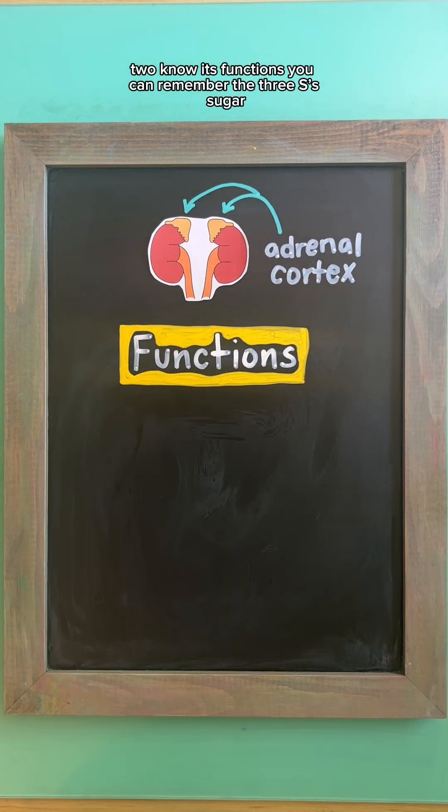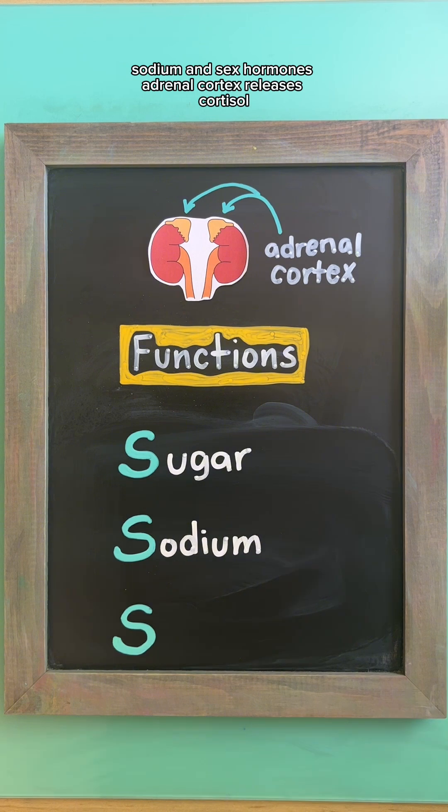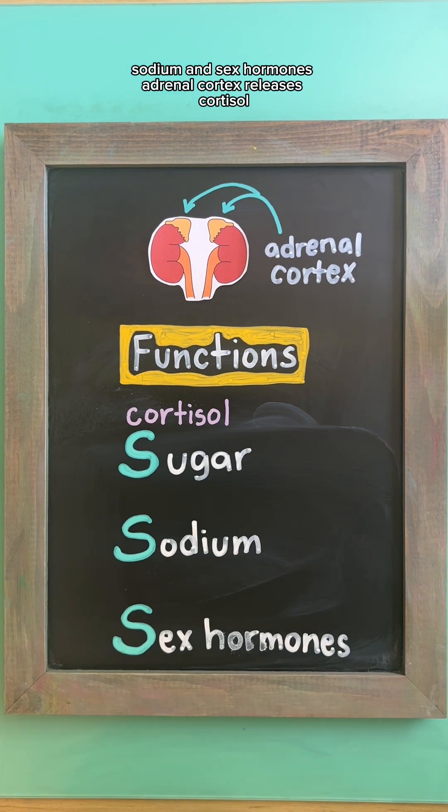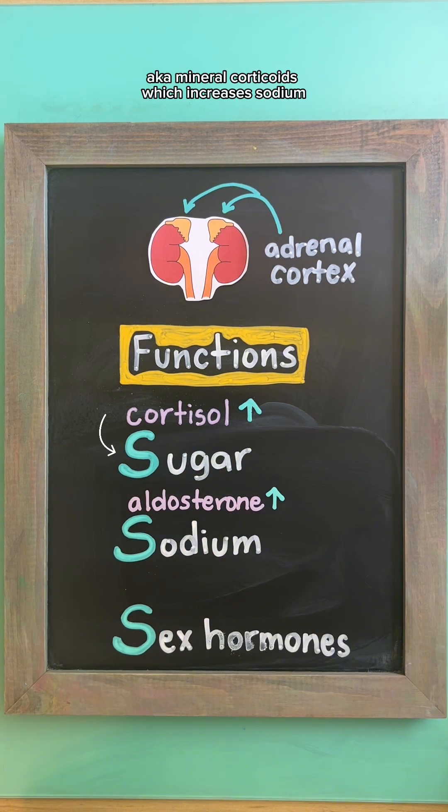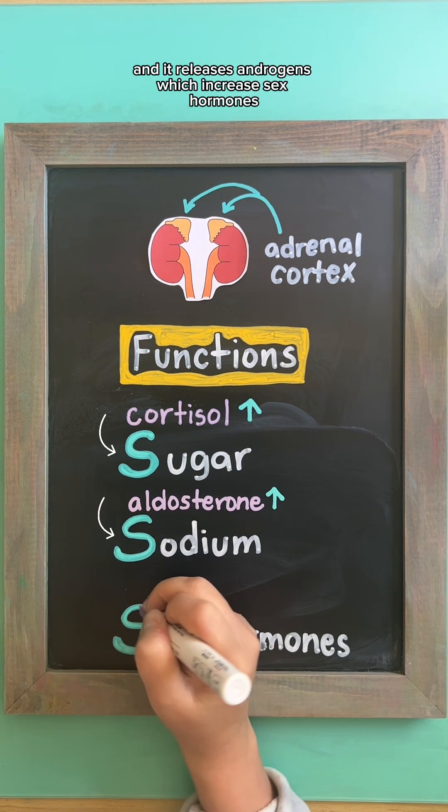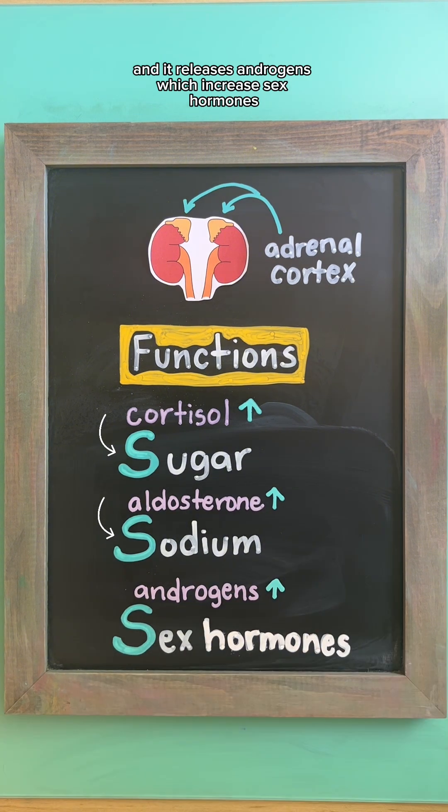To note its functions, you can remember the three S's: sugar, sodium, and sex hormones. The adrenal cortex releases cortisol, also known as corticosteroid, which increases sugar. It also releases aldosterone, also known as mineralocorticoids, which increases sodium, and it releases androgens, which increase sex hormones.